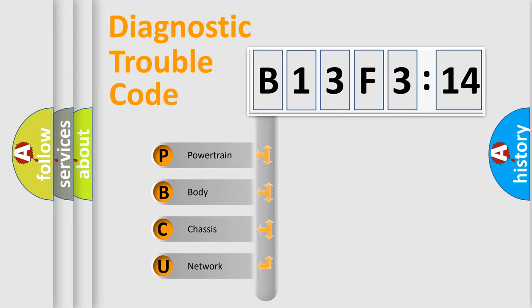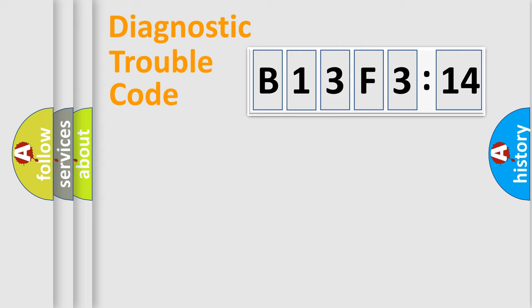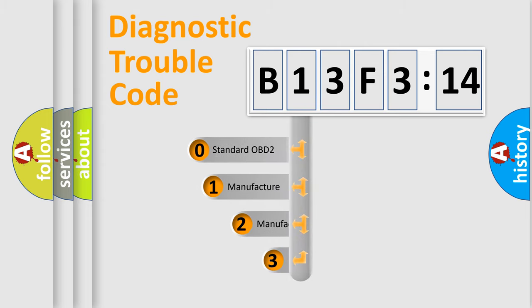We divide the electric system of the automobile into four basic units: Powertrain, Body, Chassis, and Network. This distribution is defined in the first character code.